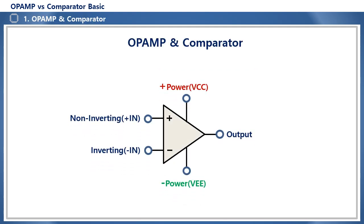Op-amp is an abbreviation for operational amplifier. It is an amplifier used to operate on input signals to obtain the desired output signals. It is called an operational amplifier because it can perform various analog operations or signal processing such as addition, subtraction, multiplication, and various filters.